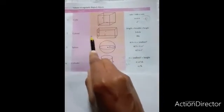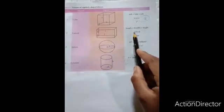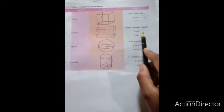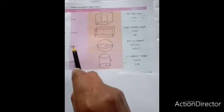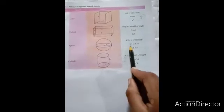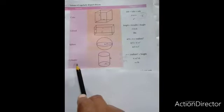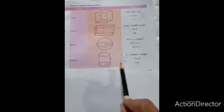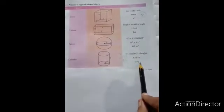To find volume of a cuboid, we have the formula length into breadth into height. For sphere, 4 by 3, pi r cube. For cylinder, we have the formula pi r square h.